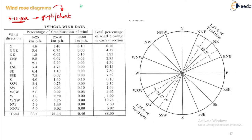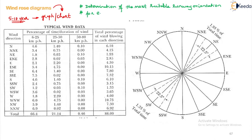So why is the wind rose diagram useful? For two important reasons: one is for the determination of the most suitable runway orientation, and the second one is for estimating the runway capacity. For these two reasons it is important.